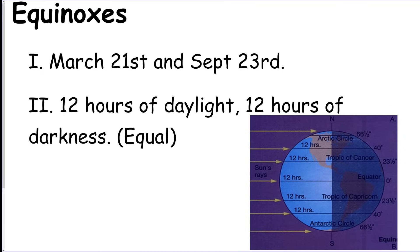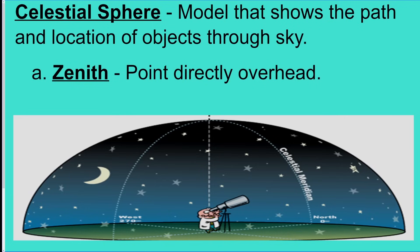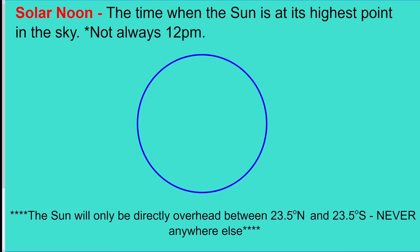We got our equinoxes—that's March 21st and September 23rd. Equal day and night, 12 hours and 12 hours everywhere, like North Pole, equator, South Pole, everywhere. Sunrise exactly east, sets exactly west, and our direct ray is on the equator.